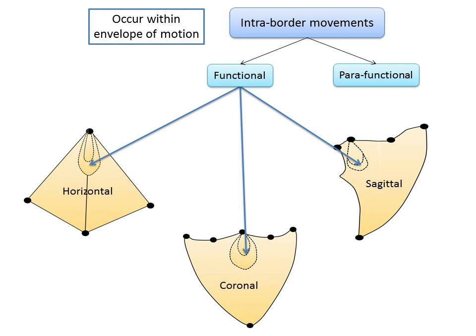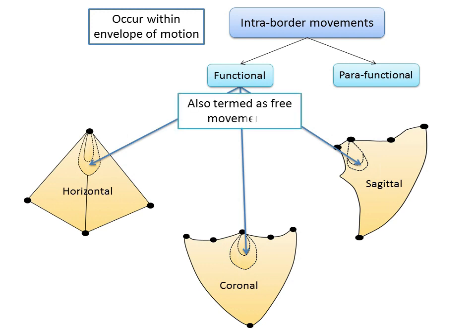In our previous presentation on border movements, we discussed the movement of the mandible in the horizontal, coronal, and sagittal plane. The dotted oval structures seen in relation to centric relation represent functional movements, also termed free movements. Functional movements are not considered border movements because they are not determined by an outer range of motion, but by conditional responses of the neuromuscular system.